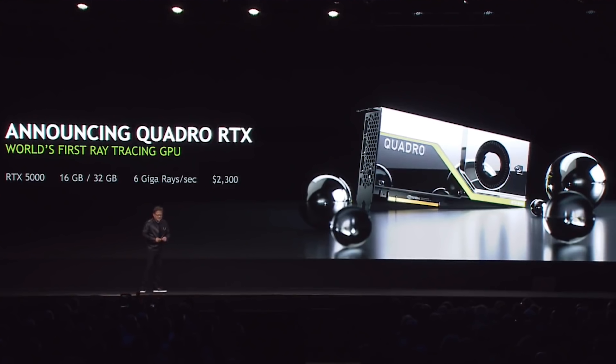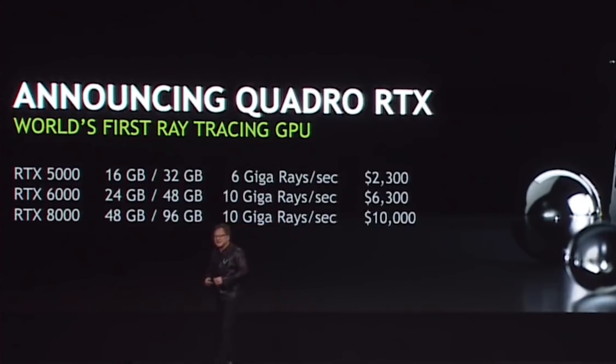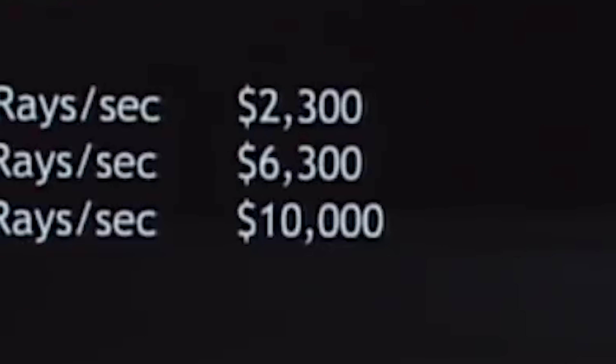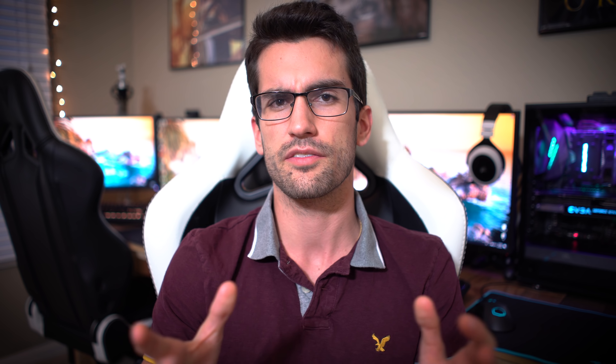Just this week, NVIDIA revealed the Turing architecture, dubbing this the world's first ray tracing GPU. The insane compute performance attributed to the current flagship, the Quadro RTX 8000, will apparently cost a hefty $10,000. It sports 48 gigs of GDDR6, 4,608 CUDA cores, and 576 Tensor cores. But these beefy specs mask an underlying trait that sets the RTX series apart from its predecessors: actually usable real-time ray tracing.